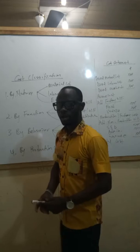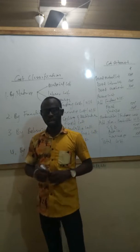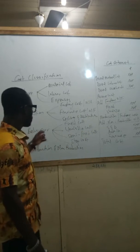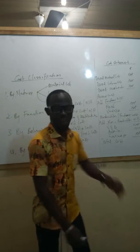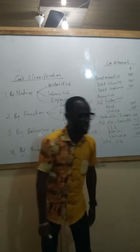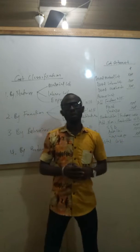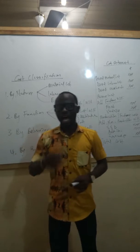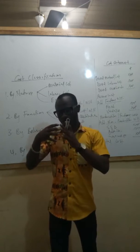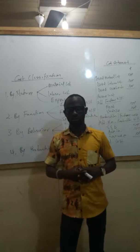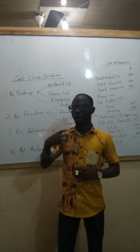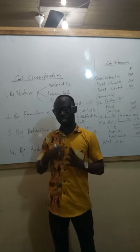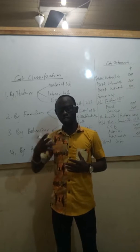The third one, which is a very key aspect of financial or management accounting, is classification of cost according to behavior. When we say classification of cost according to behavior, this is where cost is classified according to how the cost reacts with — or varies with — output level. It is about the variability of the cost according to the output level.